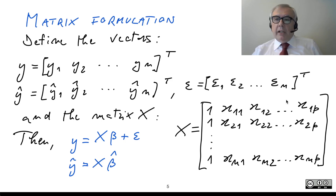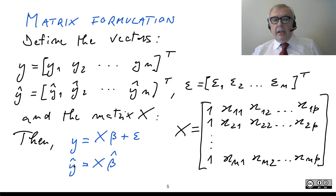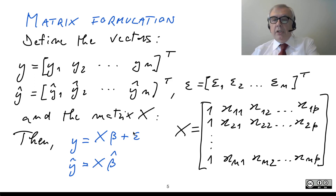P plus 1 is the number of unknown parameters, the number of beta-hat unknowns. Having introduced these matrices, we can write in matrix form: Y equals X times beta plus epsilon, and Y-hat equals X times beta-hat. This is a very concise matrix notation, particularly useful to manipulate the data and work out a solution to the linear least squares problem.